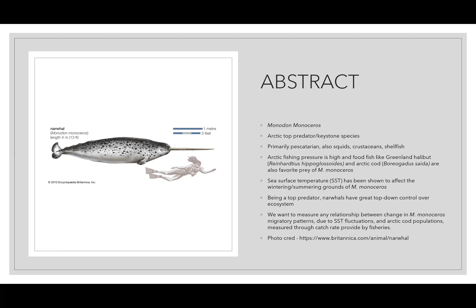Fishing pressure in the arctic is high — we get a lot of our food fish there, like the Greenland halibut and the arctic cod, which are also favorite prey of M. monoceros. Sea surface temperature has been shown to affect the wintering and summering grounds of M. monoceros. In the past they have had seasonal changes in their migratory patterns, staying in certain areas in winter and certain areas in summer.